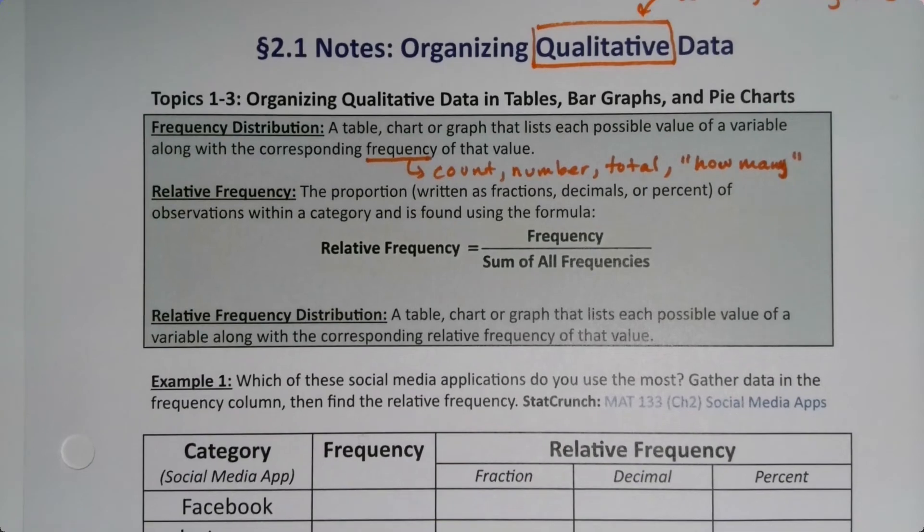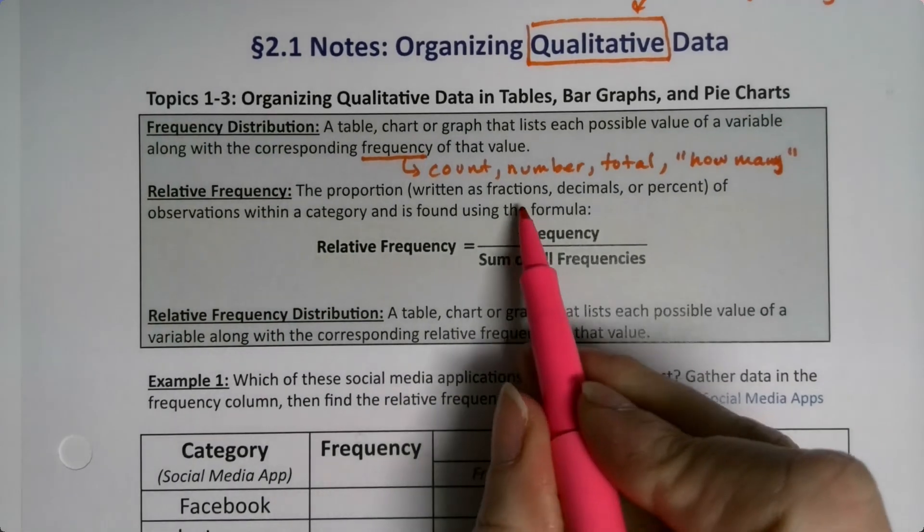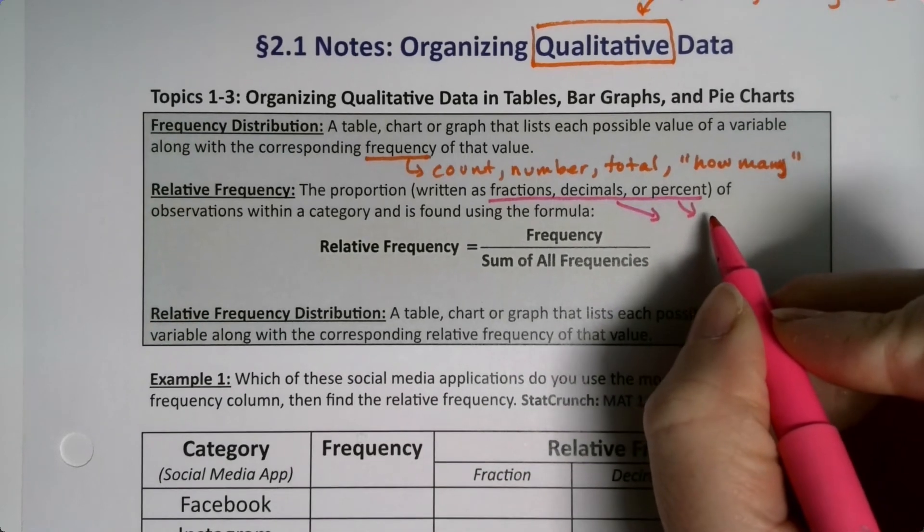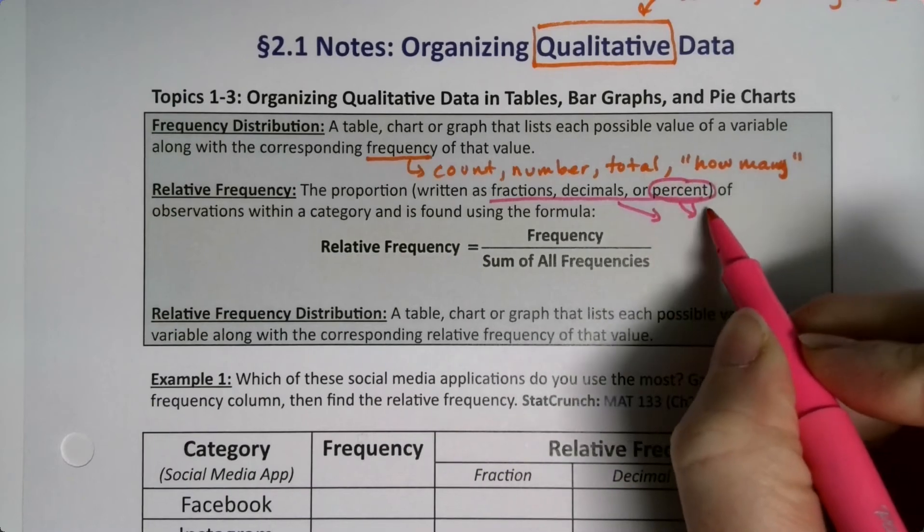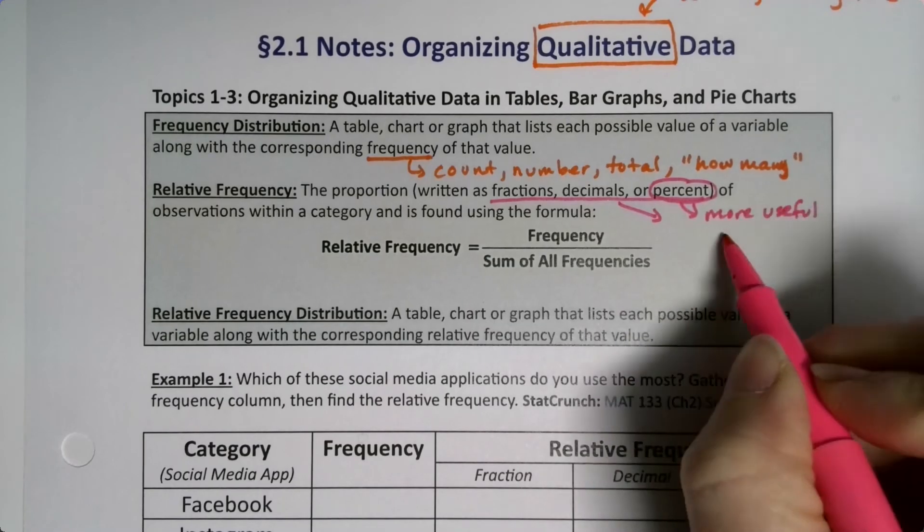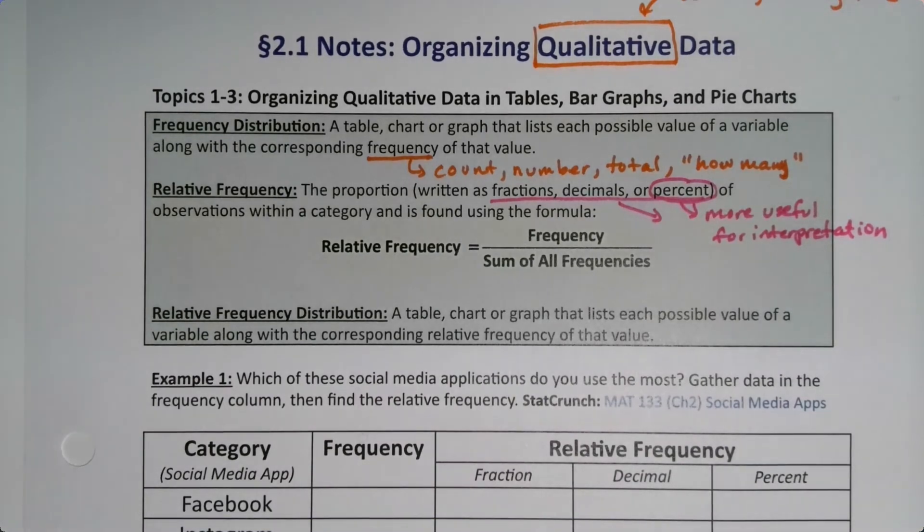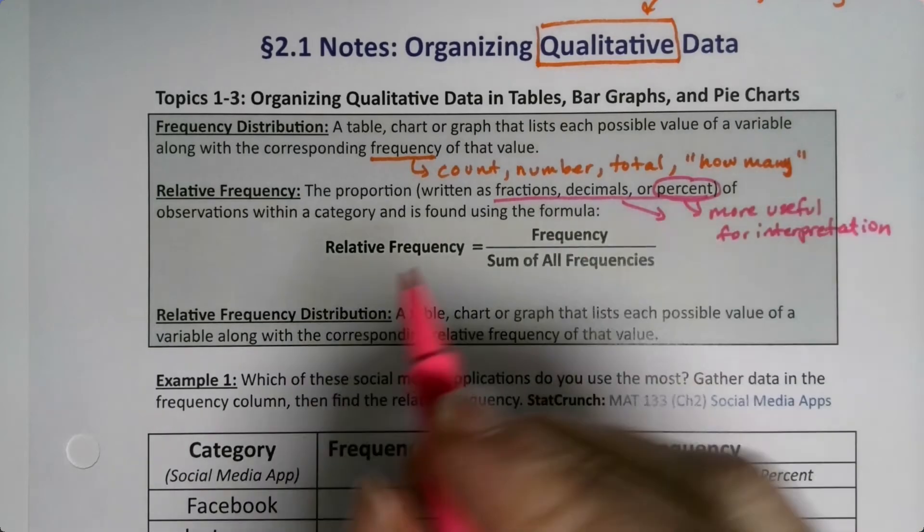Now relative frequency is the proportion of observations within a category. So instead of saying how many, it's what percent are in that category, what fraction are in that category, or decimal. Now fractions and decimals and percents are all kind of interchangeable mathematically. Decimals and percents are more useful for interpretation. So you use whichever is useful. So fractions, decimals, percents, they're all equivalent. You use whichever one's convenient or useful.